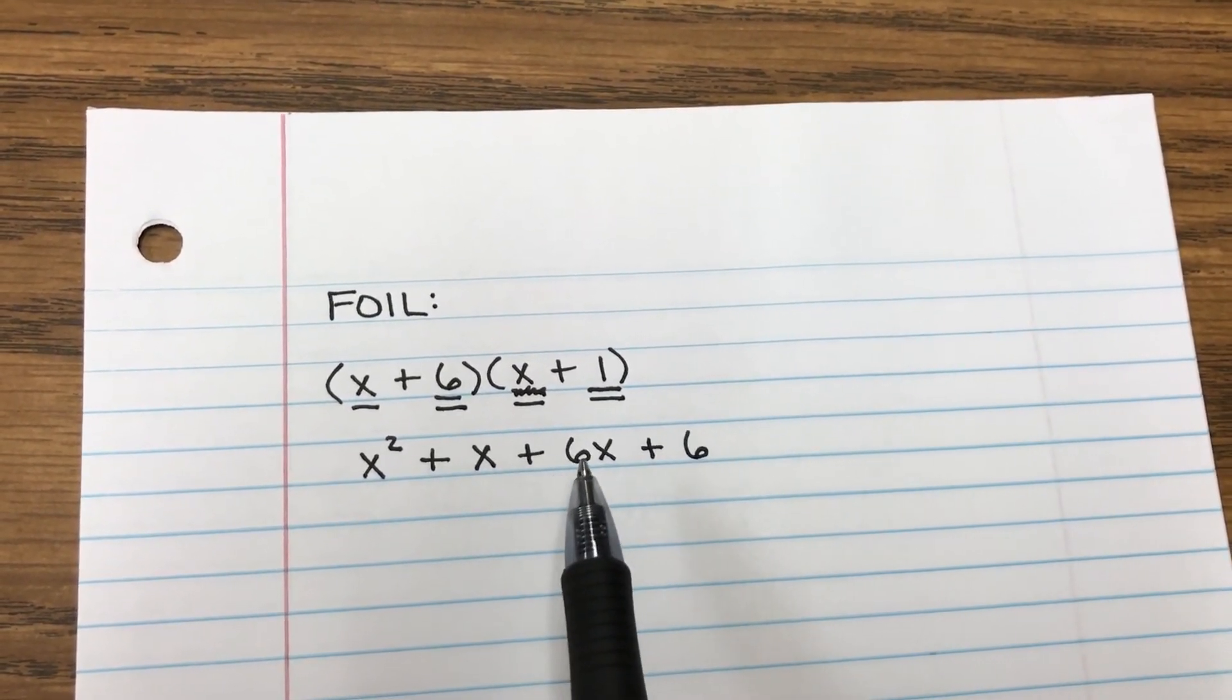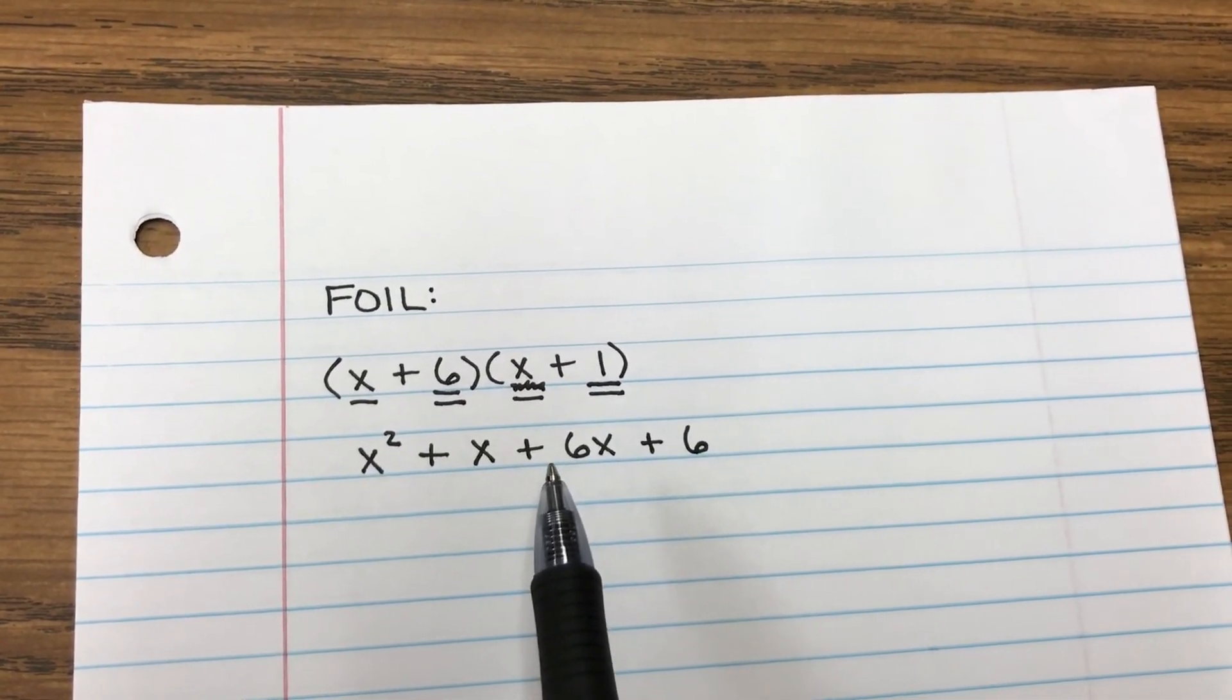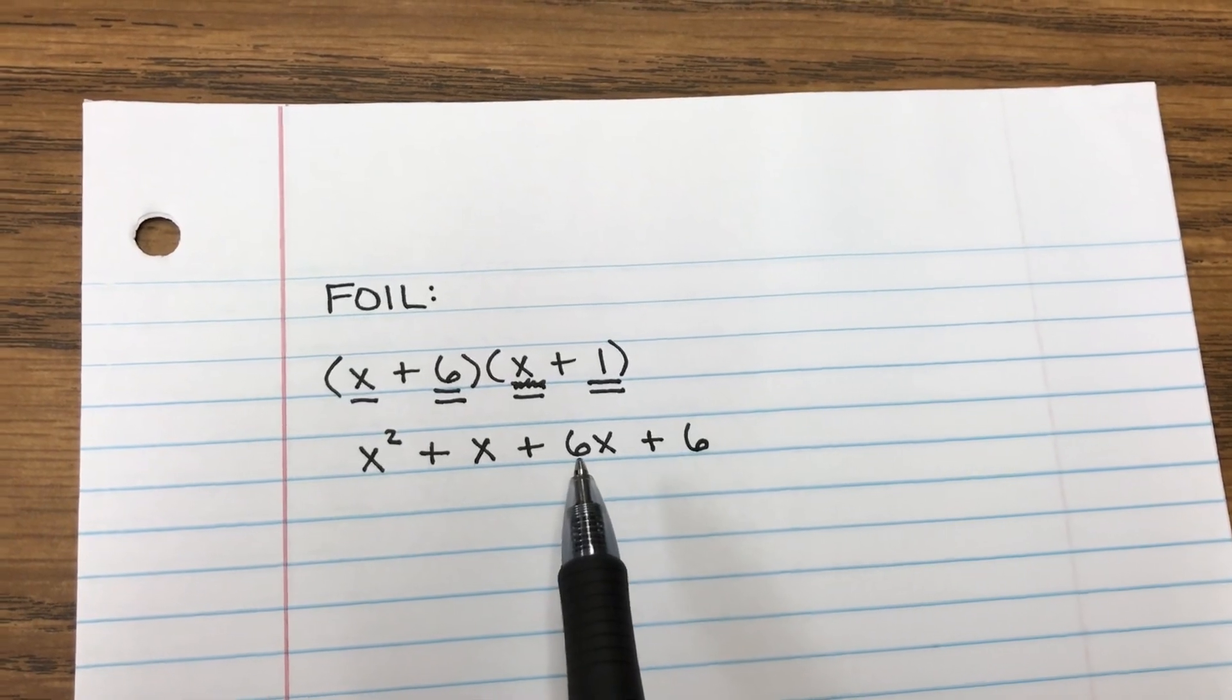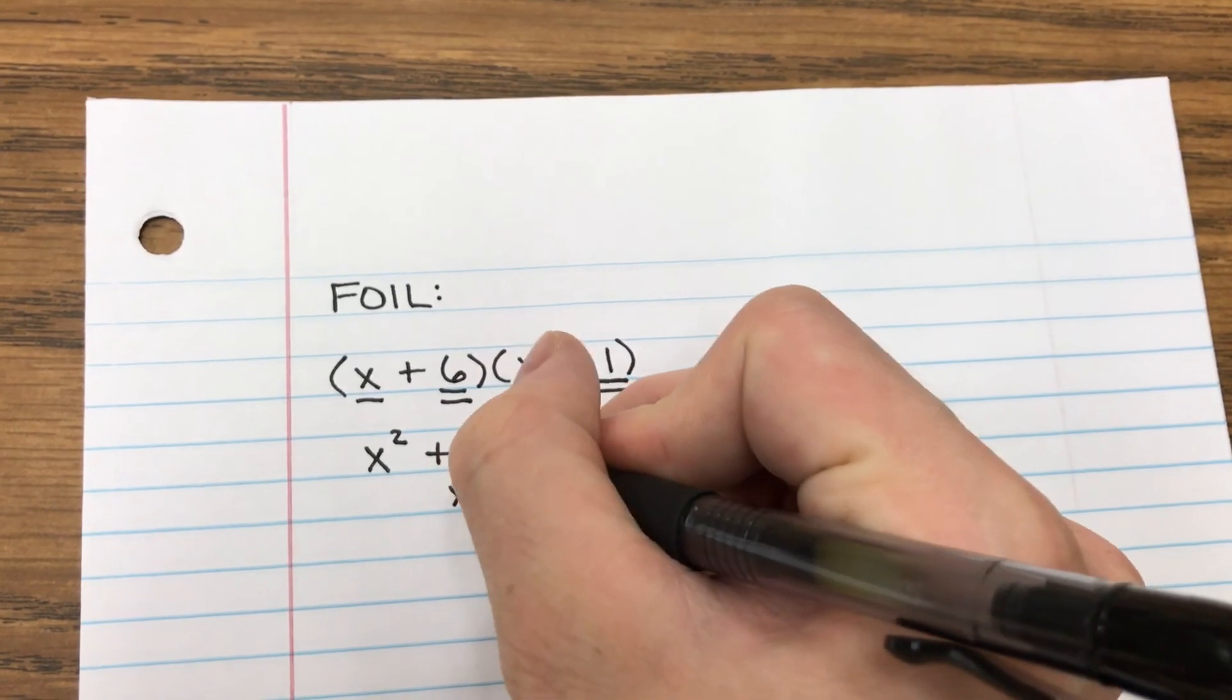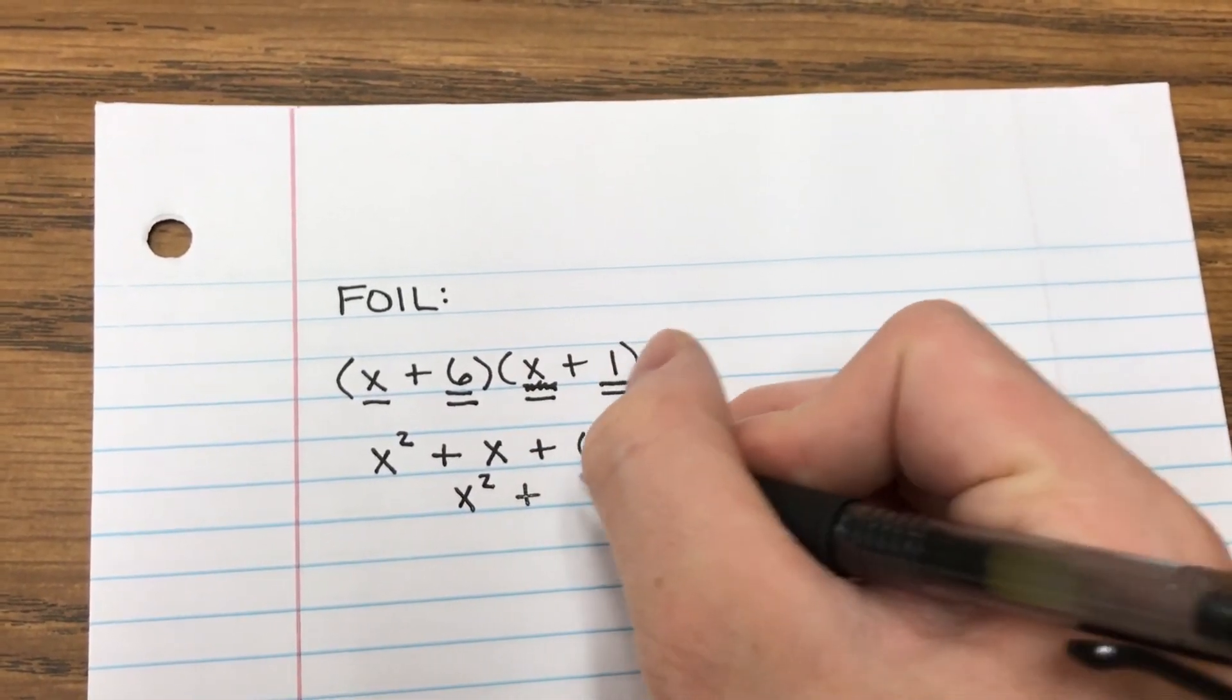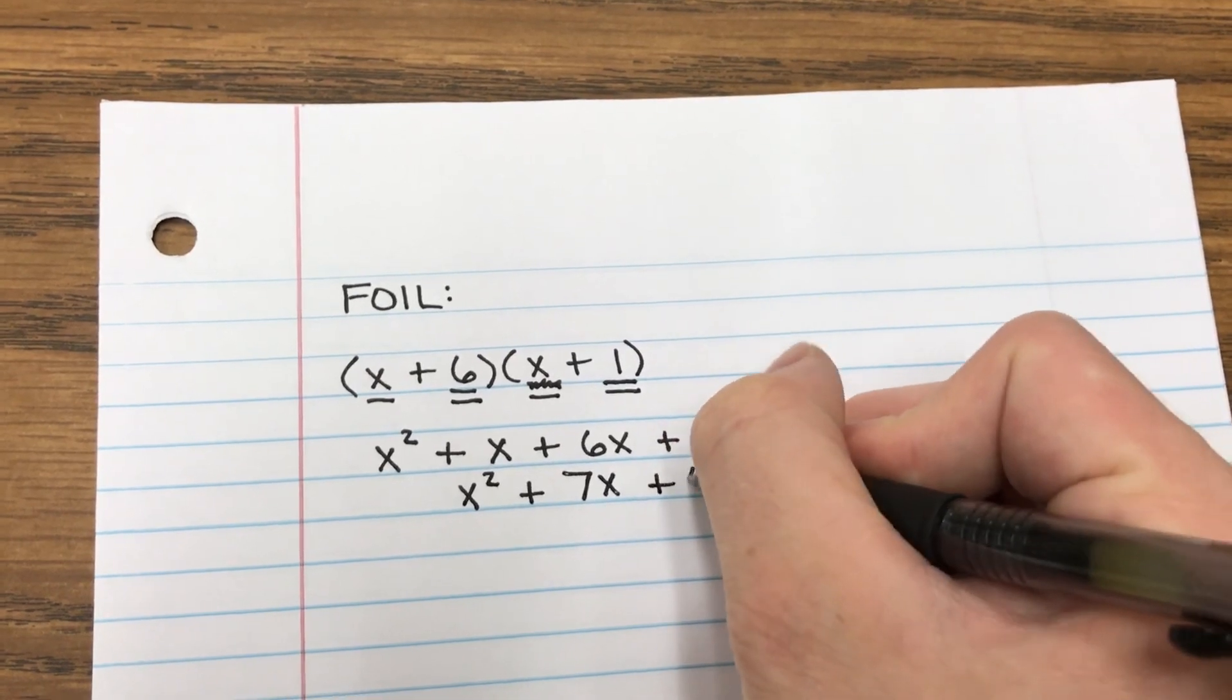So X to the first plus 6X to the first. So when we add those, we add the coefficients out in front. 6 plus 1 is 7. So I bring down my X squared, I get 7X in the middle, and I bring down my 6 at the end. And that's how you foil.